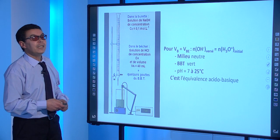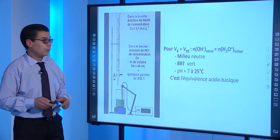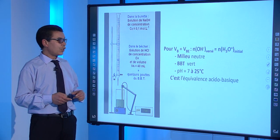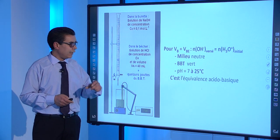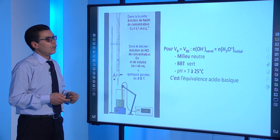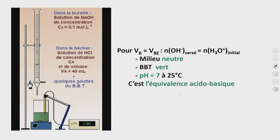Lorsque VB est égal à VBE, le nombre de moles de OH⁻ versé est égal au nombre de moles de H₃O⁺ initial. Le milieu est neutre, le BBT est vert et le pH est égal à 7. On parle alors de l'équivalence acido-basique.